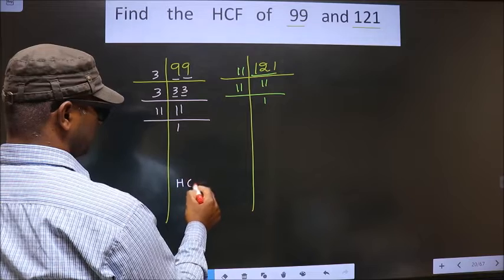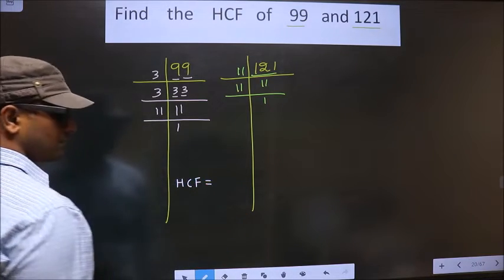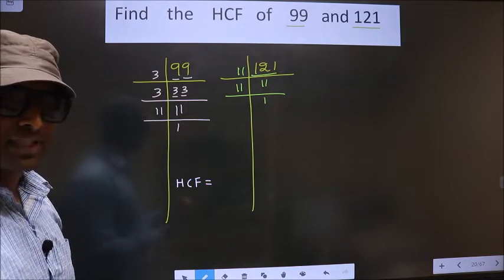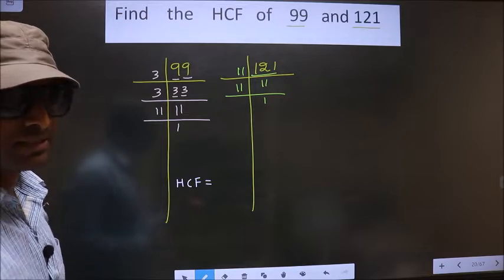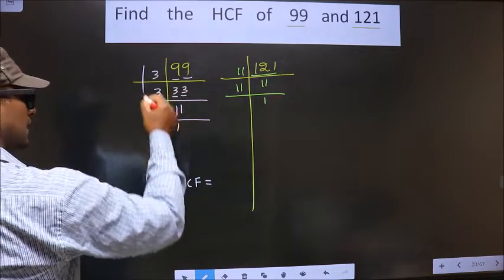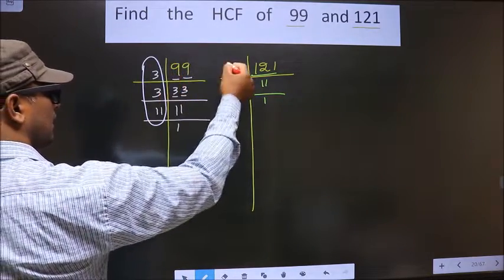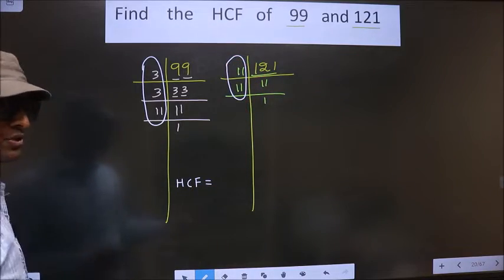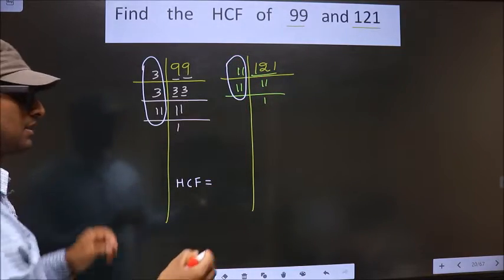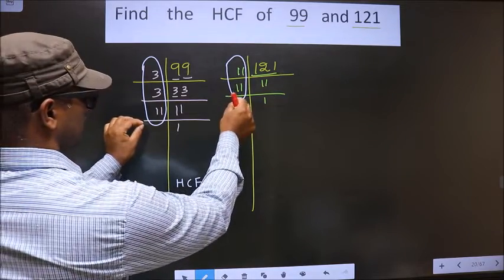So now our HCF is the product of numbers that are present here and also here. So we should find the numbers that are present in these two places.